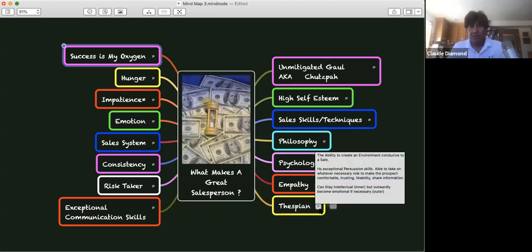You have to be a thespian. Okay? It's not a dirty word. It basically means be a good actor. The ability to create an environment conducive to the sale. You have to have exceptional persuasion skills. And this takes on more than just the psychology and the words you use. It's understanding how do you need to act? What kind of personality do you need to take on? What is that prospect looking for right now?